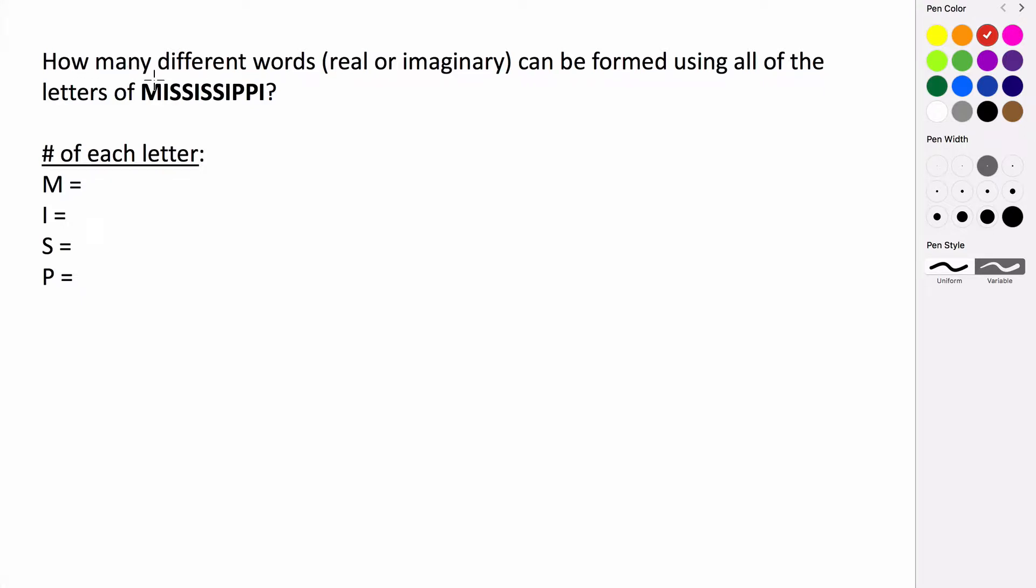All right, so let's take a look at another example where we want to rearrange letters that are non-distinct. But this time we're going to use the formula that we learned in the last example. So how many different words, real or imaginary, can be formed using all of the letters of Mississippi? So again, first we want to count how many times each letter occurs, and then we can use the formula.